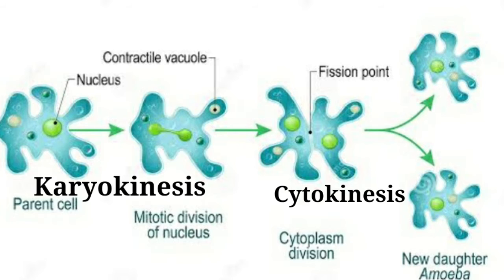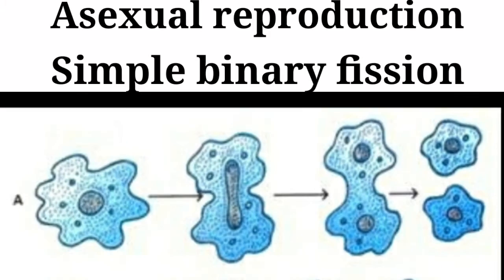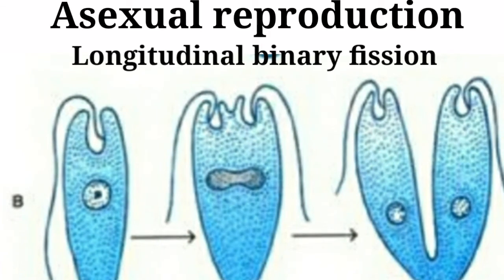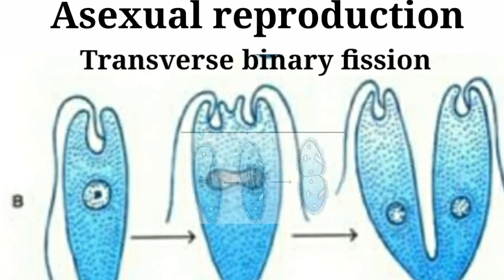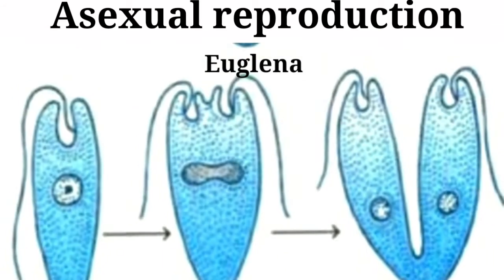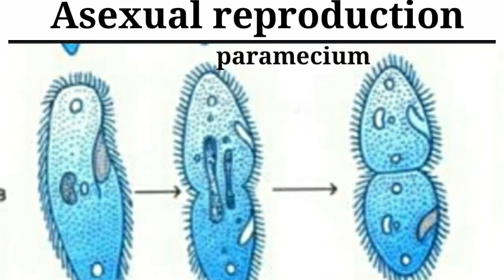On the basis of cytokinesis, binary fission is divided into three types: simple binary fission, longitudinal binary fission, and transverse binary fission. Simple binary fission is seen in amoeba, longitudinal binary fission is seen in euglena, and transverse binary fission is seen in paramecium.